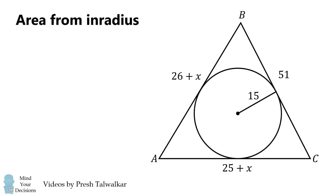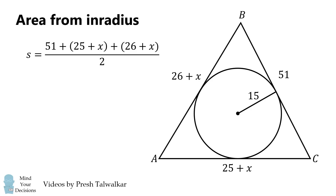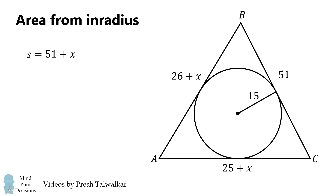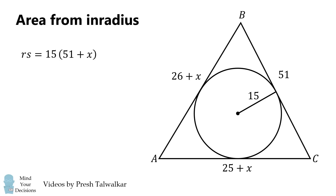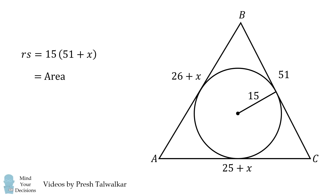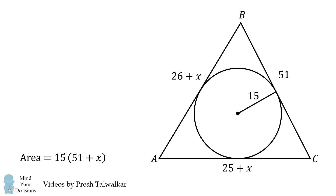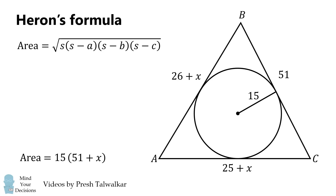We now calculate the area of triangle ABC in two different ways. First, using the in-radius: the semi-perimeter is the perimeter divided by 2, which simplifies to 51 plus X. The area equals R times S, which is 15 multiplied by (51 plus X). We set this equation aside.